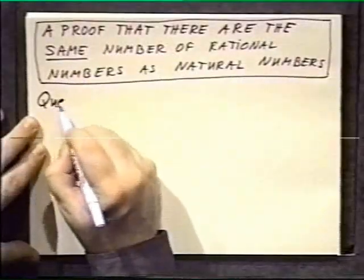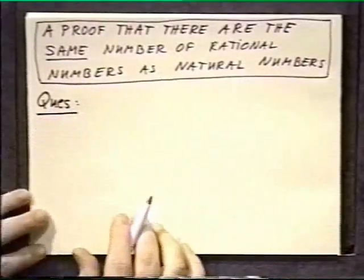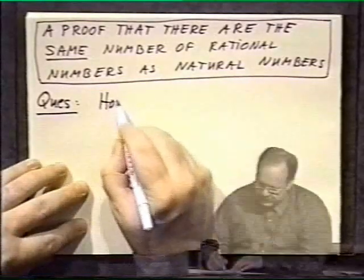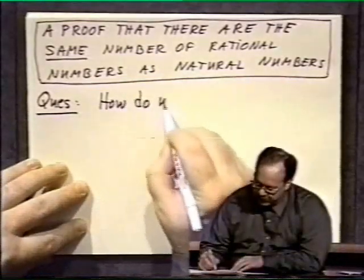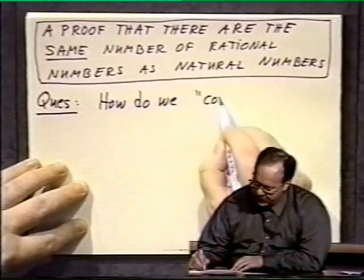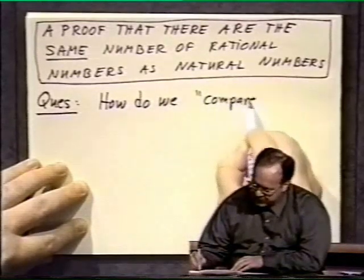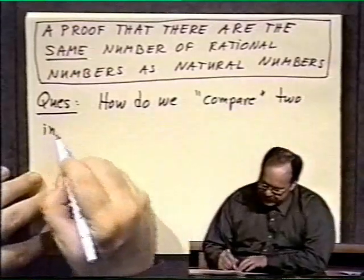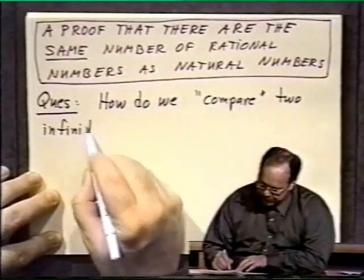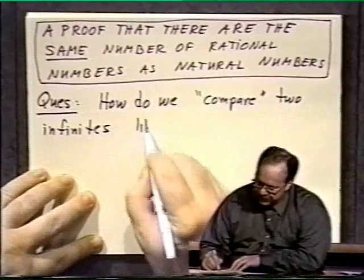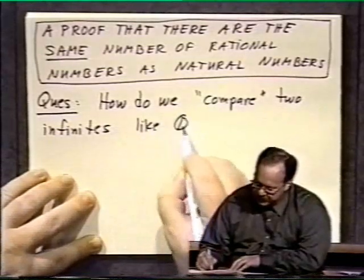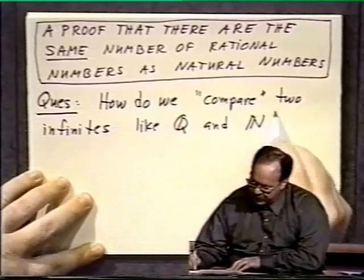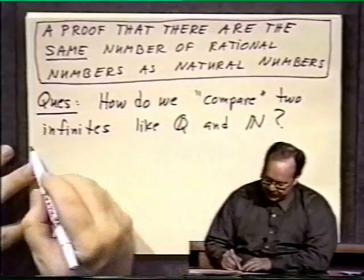So the first question one should ask is: how do you compare two infinite sets? I mean, they're infinite after all, so we need to have some way of comparing them that makes sense. How do we compare two infinite sets like the set of rational numbers, denoted by Q, and the set of natural numbers, denoted by boldface N?